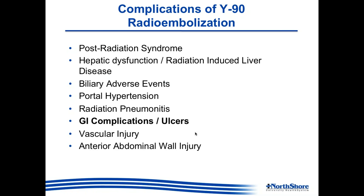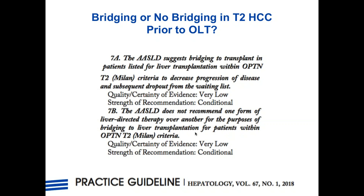One may also raise the question of why Y-90 radioembolization was chosen — could this complication have been avoided? The recently published AASLD guidelines in January 2018 in Hepatology on hepatocellular carcinoma mention that bridging to transplant is suggested for patients listed for liver transplantation within the Milan criteria, in order to decrease disease progression and dropout from the waiting list. The guidelines do not recommend one form of liver-directed therapy over another for bridging within the Milan criteria. It is worthy of noting that the quality and certainty of evidence for both these recommendations is very low, and the strength conditional.